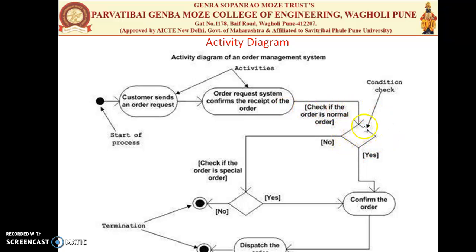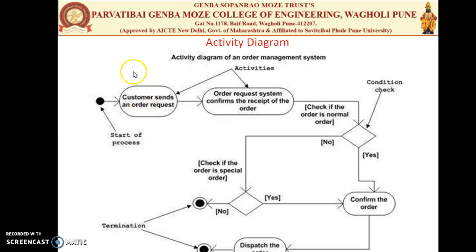After confirming receipt, it goes to a decision box. If it is a normal order request, it comes directly from the order. If it is not, it checks for a special request. If still no special order is available, the process terminates. If it is a special order, it comes from the order and goes to dispatch, after which the process terminates.